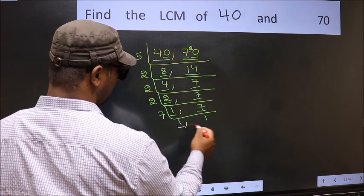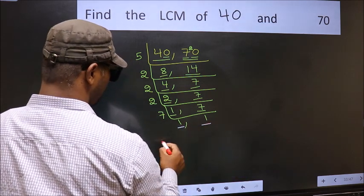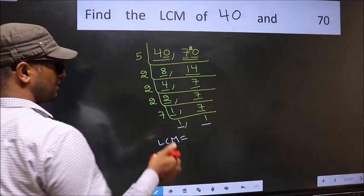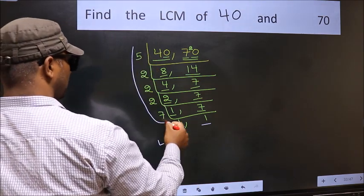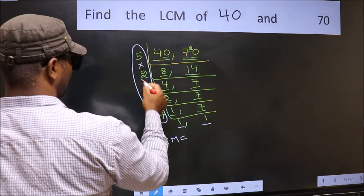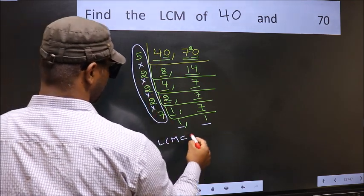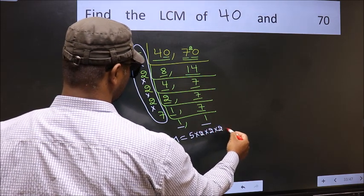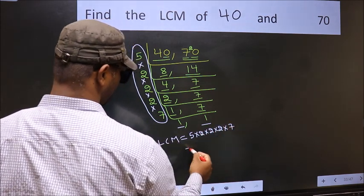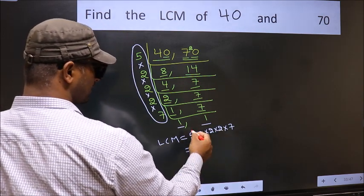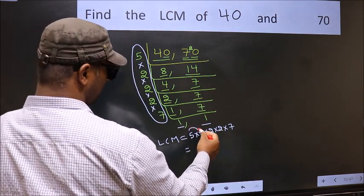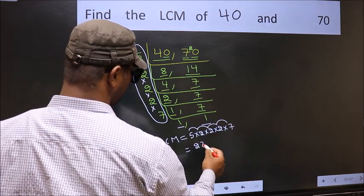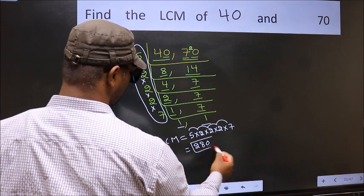So we got 1 in both places. Our LCM is the product of these numbers, that is 5 into 2 into 2 into 2 into 7. So let us multiply these numbers: 5 into 2 is 10, into 2 is 20, into 2 is 40, into 7 is 280. So 280 is our LCM.